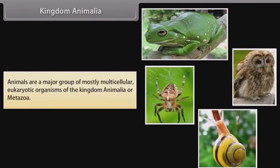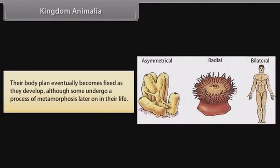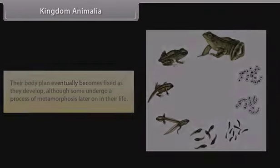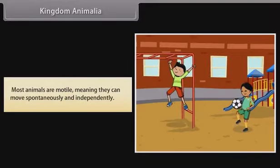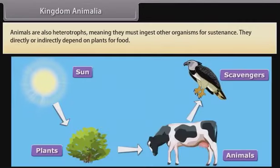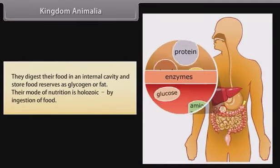Animals are a major group of mostly multicellular eukaryotic organisms of the kingdom Animalia, or Metazoa. Their body plan eventually becomes fixed as they develop, although some undergo a process of metamorphosis later in their life. Most animals are motile, meaning they can move spontaneously and independently. Animals are also heterotrophs, meaning they must ingest other organisms for sustenance. They directly or indirectly depend on plants for food, digesting it in an internal cavity and storing food reserves as glycogen or fat.